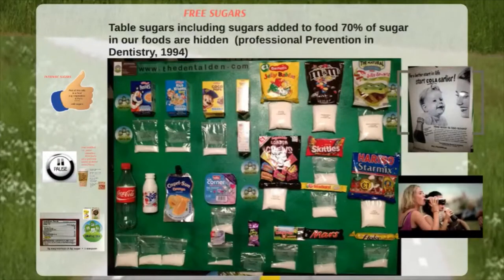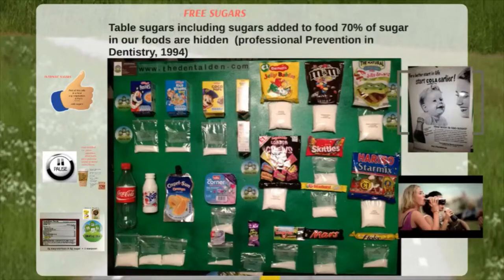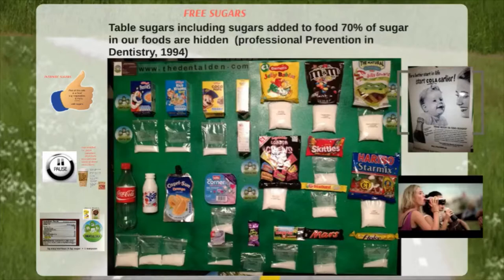Free sugars are table sugars, including sugars added to food, and about 70% of sugars in our foods are hidden. Some companies use names like 'natural' or promote foods as healthy. Some people mix up fat-free with sugar-free. There's a lot of clever marketing that makes parents and caregivers believe a food or drink is a good alternative when sometimes it's not. We will talk about reading sugar labels and how to determine that.